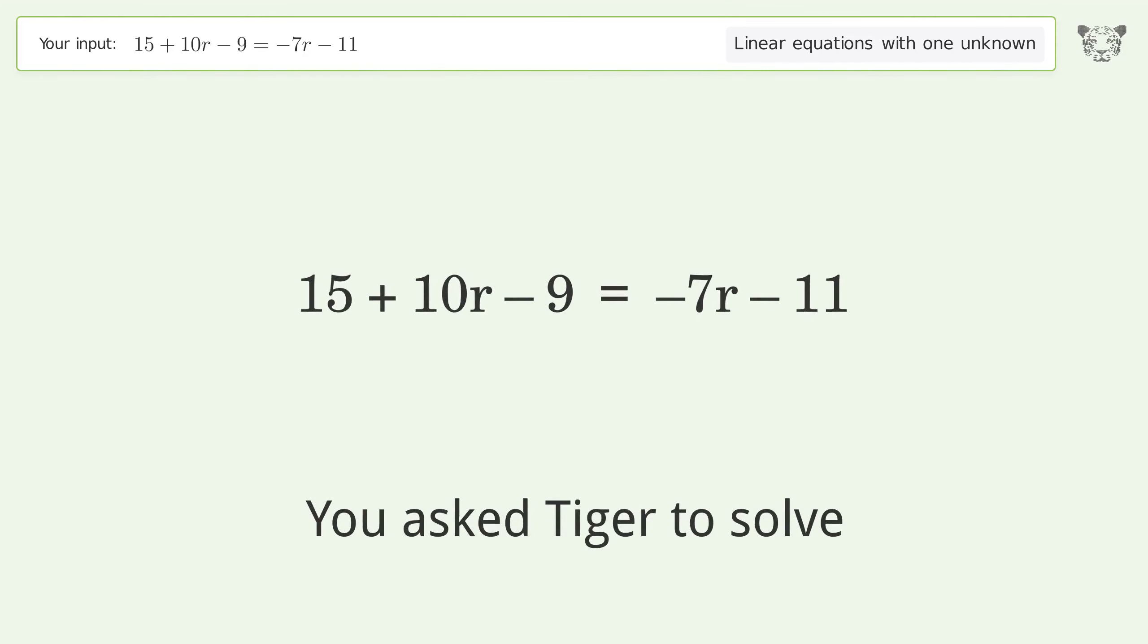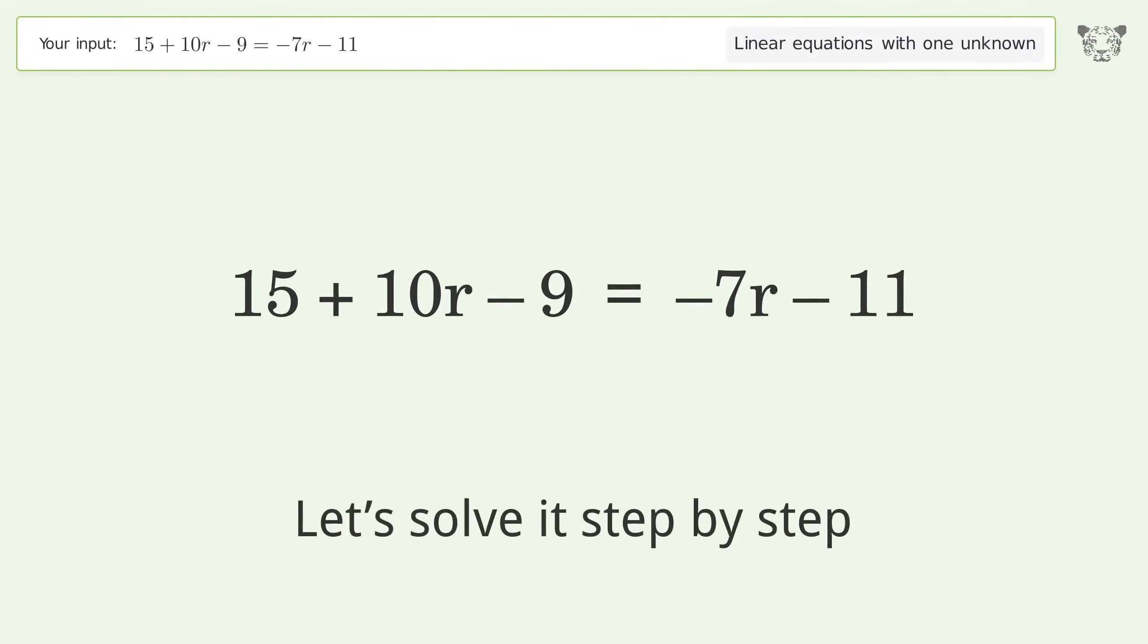You asked Tiger to solve this problem dealing with linear equations with one unknown. The final result is r equals negative one. Let's solve it step by step. Simplify the expression and group like terms.